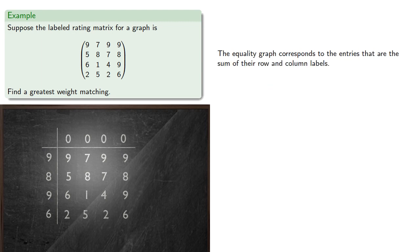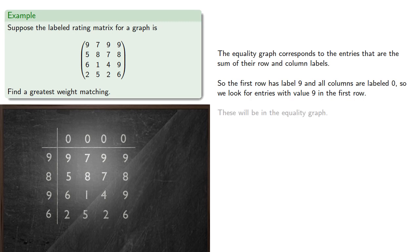The equality graph corresponds to the entries that are the sum of their row and column labels. Since the first row has label 9 and all columns are labeled 0, we look for entries with value 9 in the first row. These will be in the equality graph. Since we'll need them later, we'll cover up the entries that are not in the equality graph.